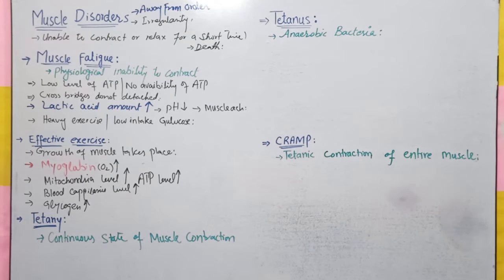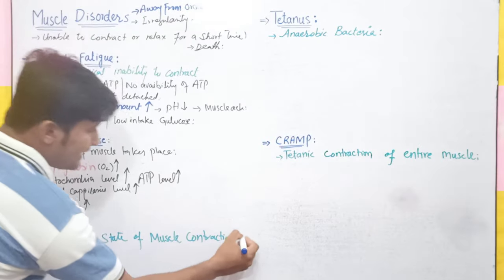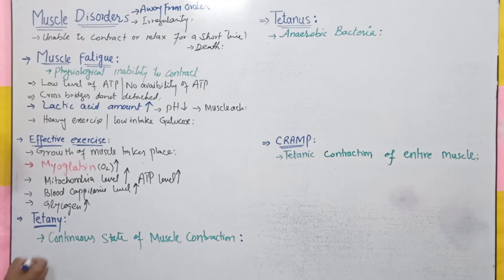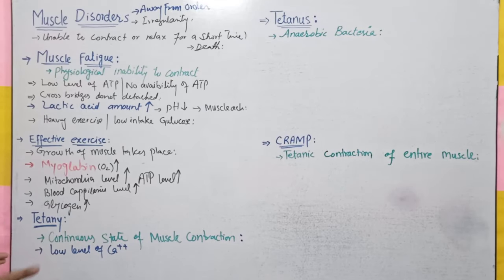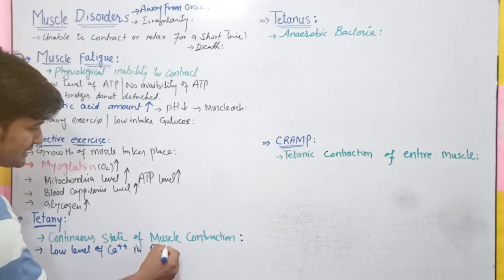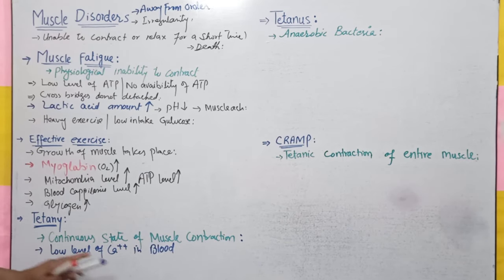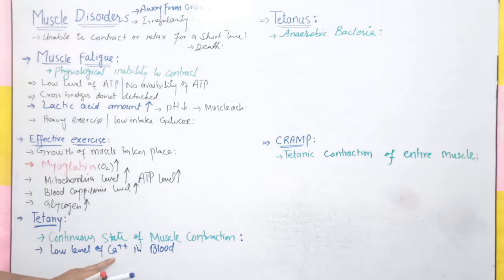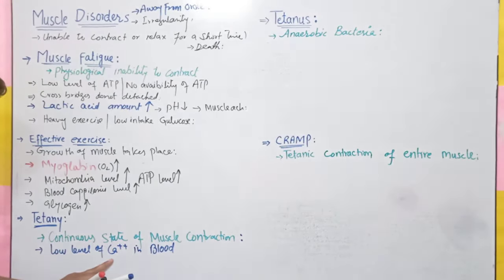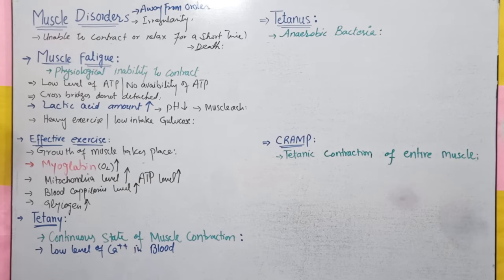Next hamare paas hai tetany. Tetany ko hum define karenge: continuous state of muscle contraction. Is state mein muscle continuously contract kiya hota hai. Aisa kyon hota hai? Jab low level of calcium — matlab calcium ka intake bahut zyada kam ho — in blood. Aapko pata hai ke calcium ions, muscle contraction and relaxation mein aur actin-myosin cross bridges ki formation aur detachment mein bahut role hota hai. Agar calcium ka level low hai to tetany disease hogi.